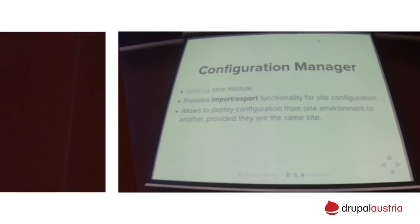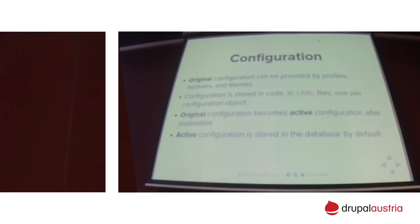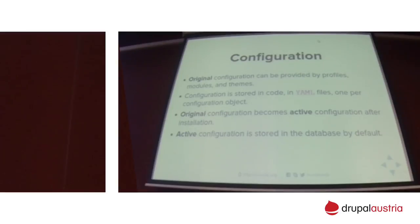There is the Config module in core which provides import-export functionality. The original configuration can be provided by modules, profiles, and themes — they come in YAML files, one YAML file per configuration object. Once a module is enabled, they become active. The active configuration is stored by default in the database, but you can change that. The important part is that you import it rather than editing the live configuration directly, because if you enable a module, the enable hooks have to run as well — bypassing import/export would prevent that.